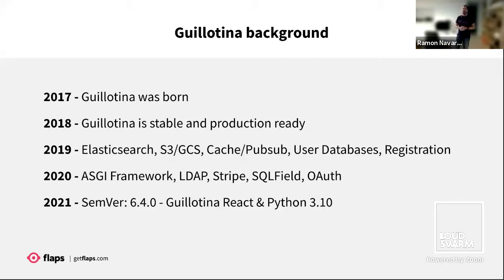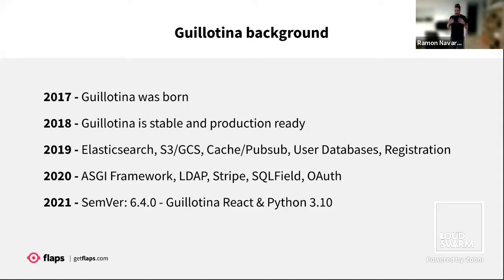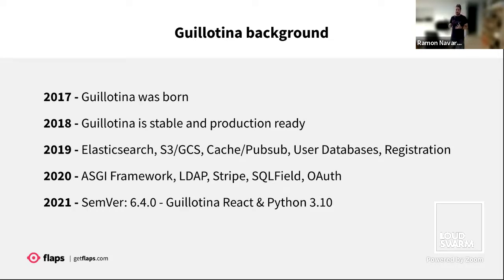That was 2019. In 2020, we decided to implement the ASGI framework to follow the ASGI protocol, LDAP — we know a lot of people love LDAP — so we implemented that plugin, Stripe, and a lot of other plugins to provide easy-to-use integrations onto Guillotina. And nowadays, we are in 2021. We have version 6.4.0 release candidate on PyPy already. We are working on the front-end with Guillotina React to build easy interfaces, and we are supporting Python 3.10 with the latest Async API — super amazing evolution.